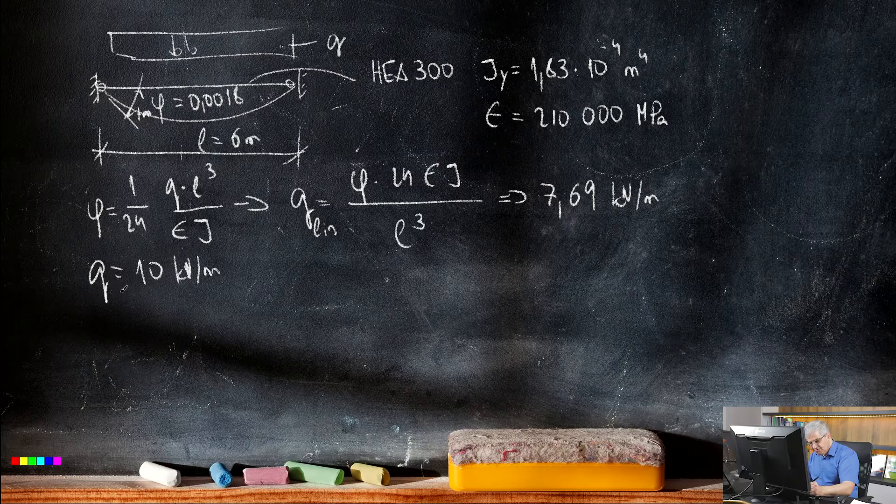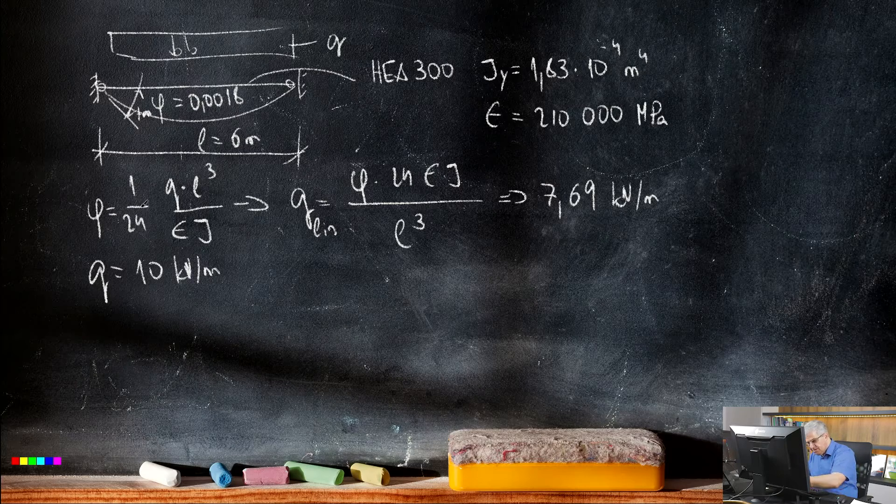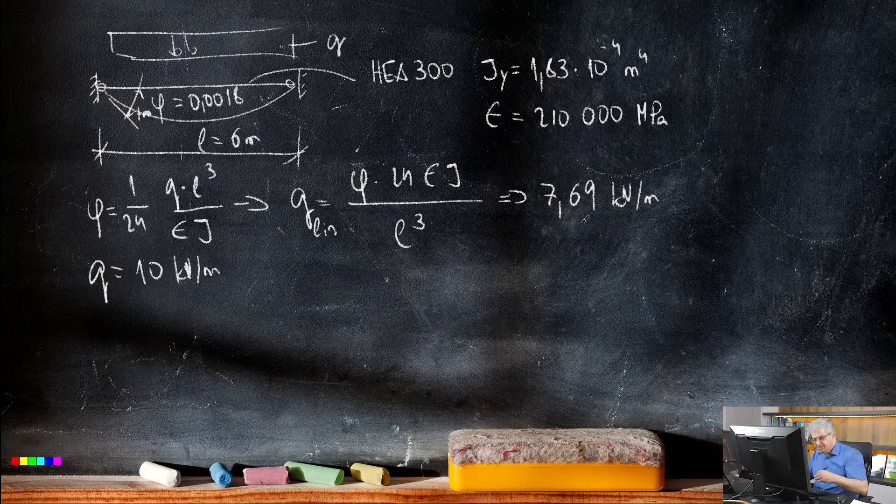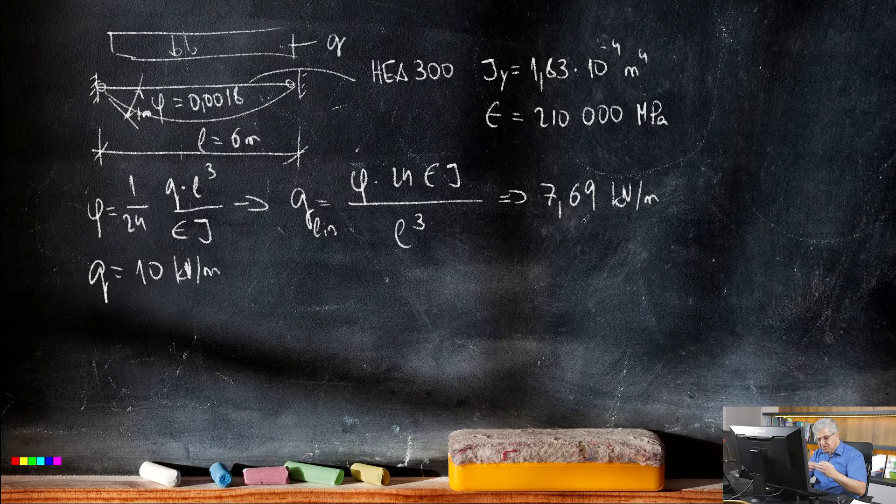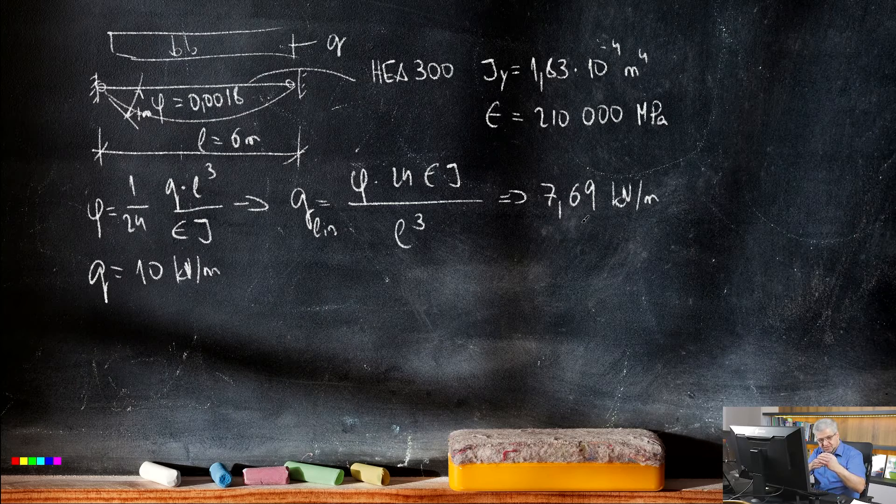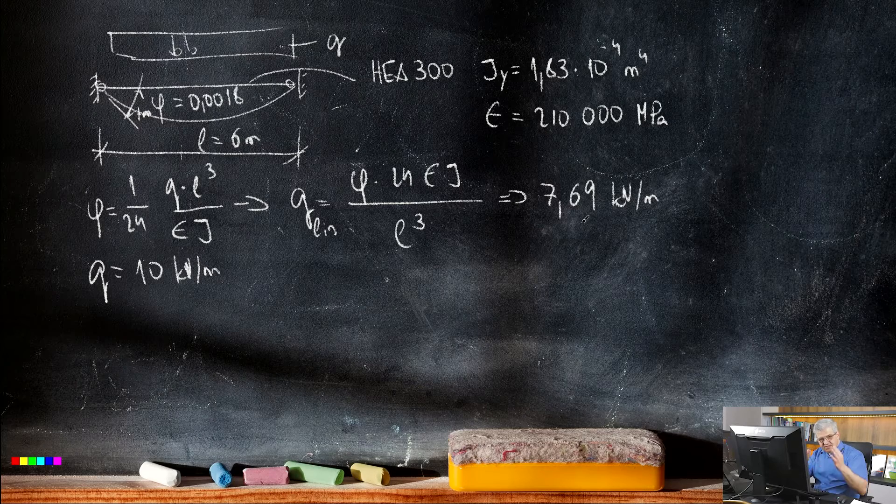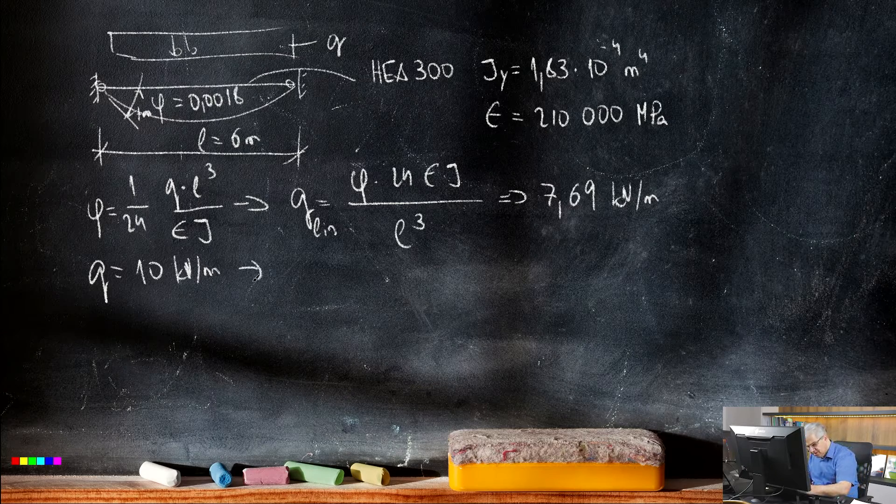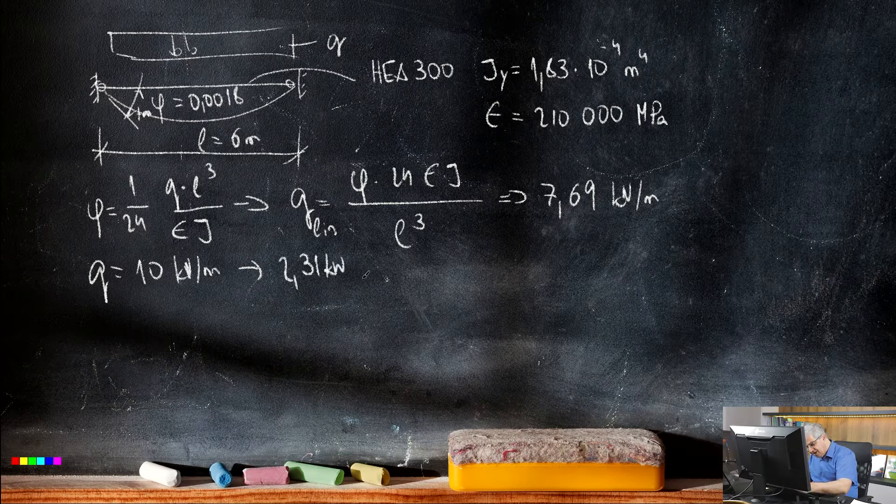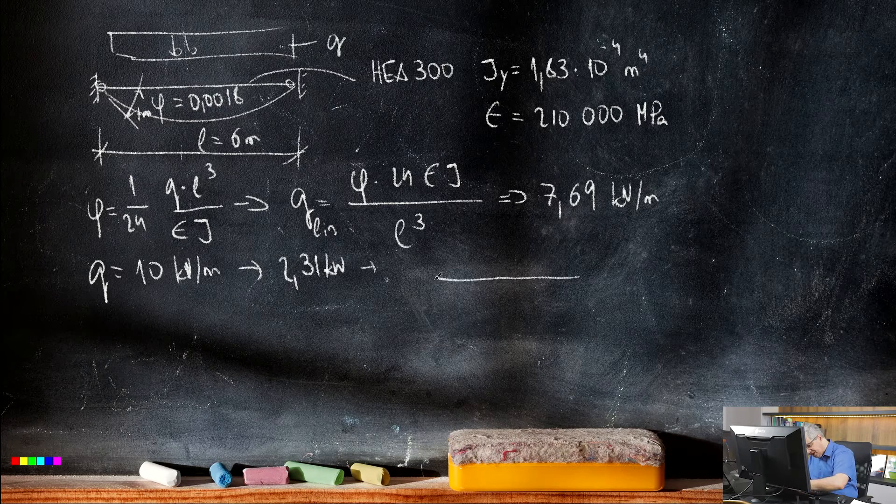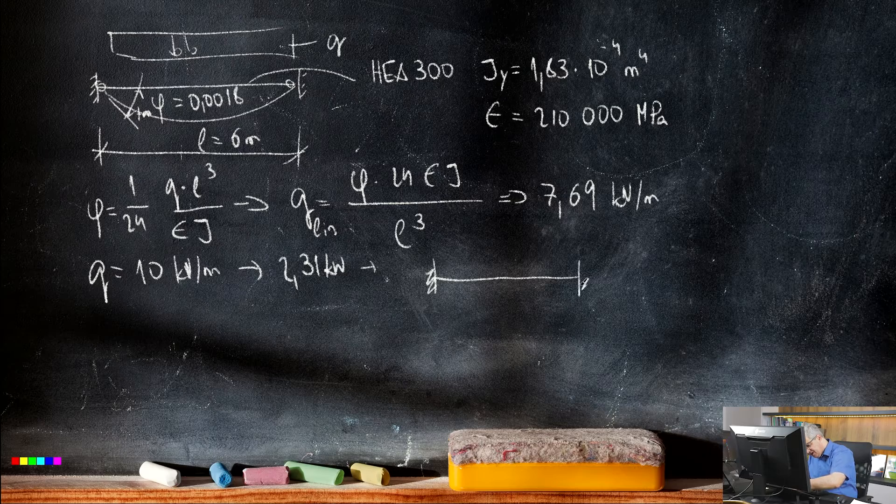What happened? For all loads below this 7.69 we have simple support. But for the load which is between 7.69 and 10 we get fixed supports. So this is 2.31 kN and from this 2.31 kN we have such system.